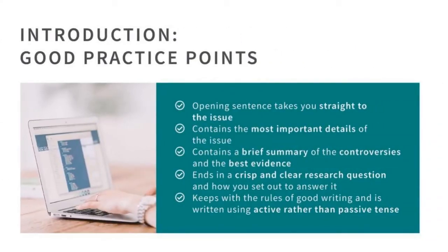Nobody wants to read tons of references or endless citations. Keep it short. Bring the reader in at the start with an opening sentence that takes you straight to the issue. Get the most important details in and provide a brief summary of the controversies and the best evidence for that controversy. Your paper is probably going to be framed as a question, so end the introduction with a crisp, clear research question and how you set out to answer it. Writing in the active voice is probably a better choice than writing in the passive.